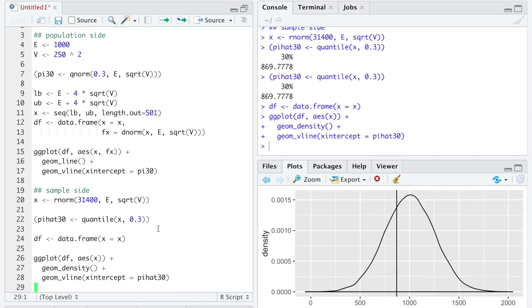You can see it's a little bit more squiggly. It's not as perfectly smooth since we are now on the sample side, but we are estimating the population parameters, the density function, and the 30th percentile quite well.